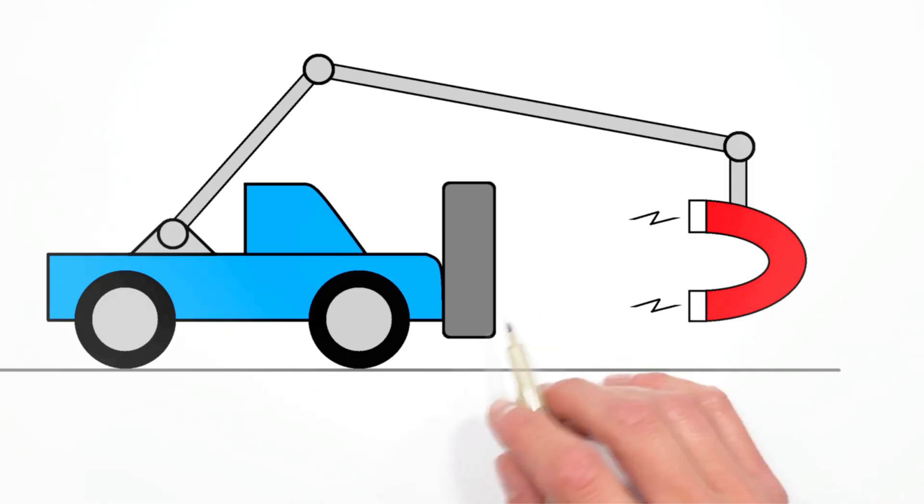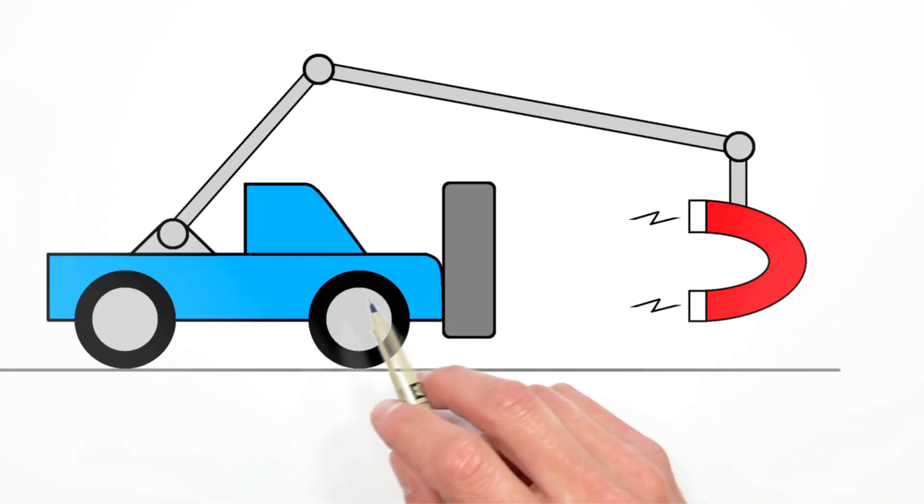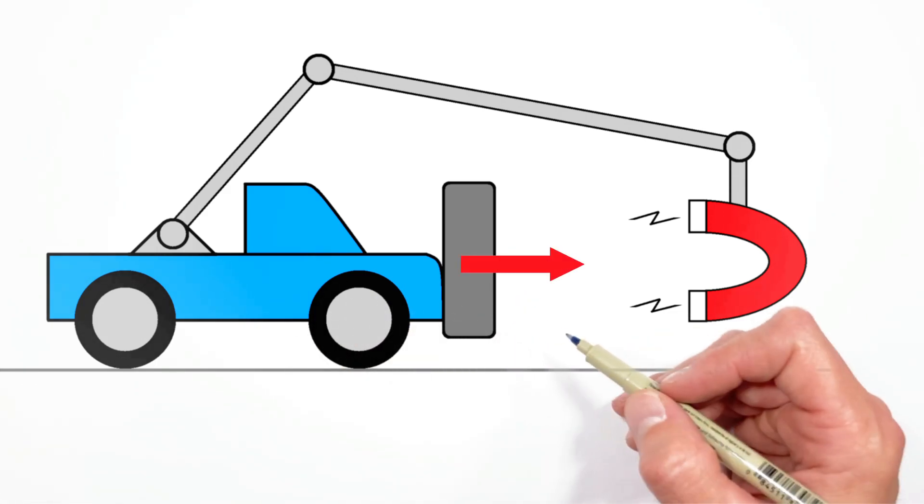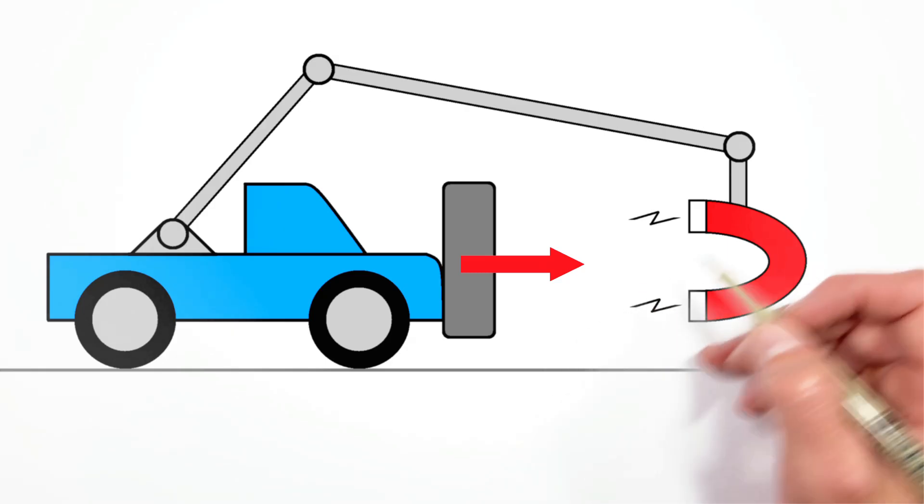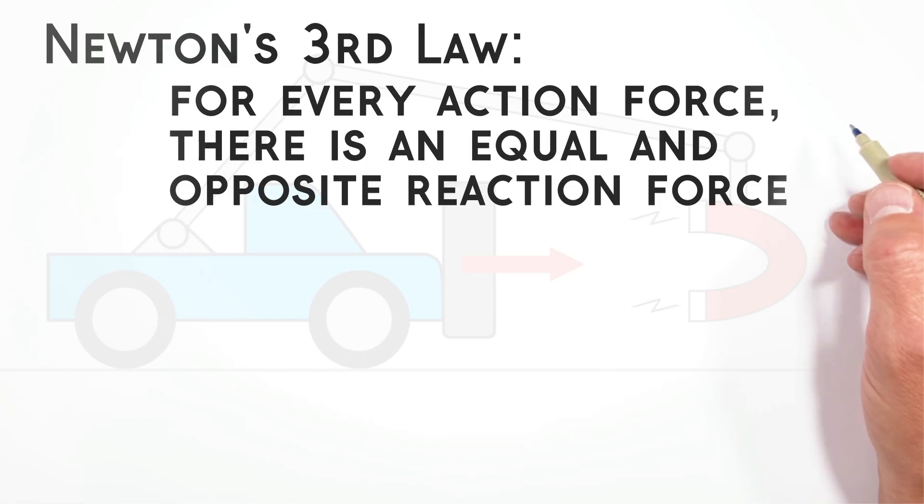The problem is, this doesn't work. And let me explain why. See, nobody can argue that this magnet right here is in fact going to pull this steel plate forward. But the problem is something called Newton's Third Law. You see, Newton's Third Law says that for every action force, there's an equal and opposite reaction force.